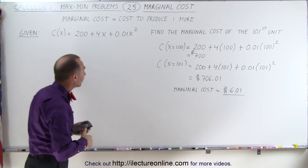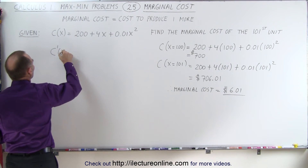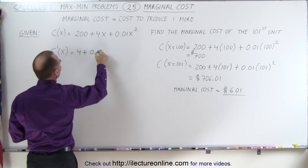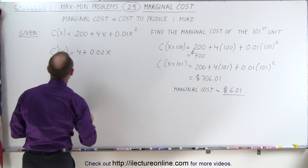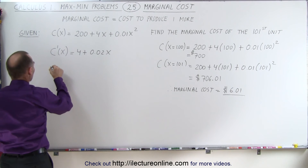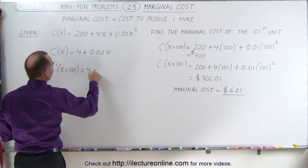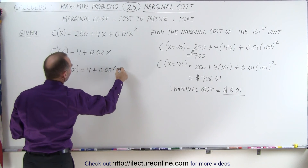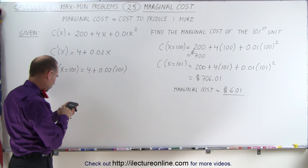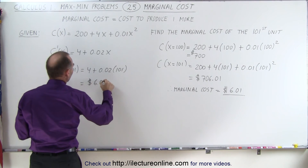There's an easier way to do that using the first derivative. We're going to take the first derivative of the cost function, which represents the marginal cost. So C prime of x is equal to 4 plus 0.02x. Now we plug in 101: C prime when x equals 101 is 4 plus 0.02 times 101, and that equals $6.02.